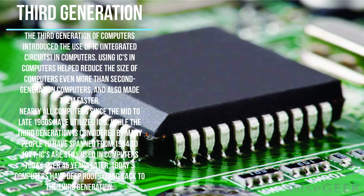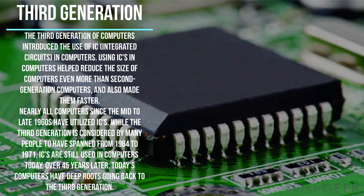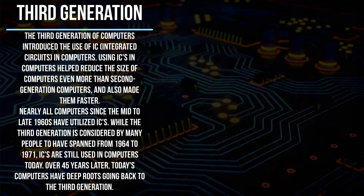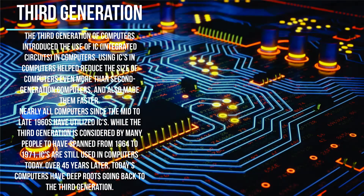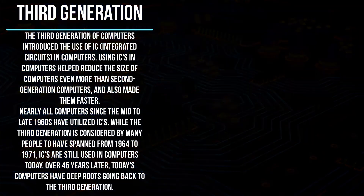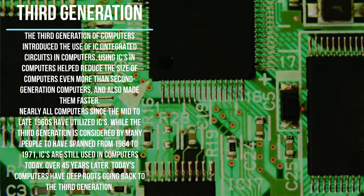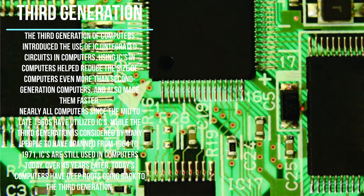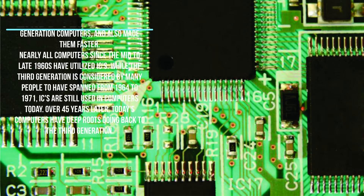While the third generation is considered by many people to have spanned from 1964 to 1971, ICs are still used in computers today — over 45 years later. Today's computers have deep roots going back to the third generation.